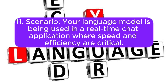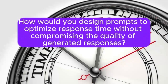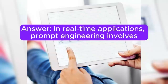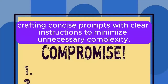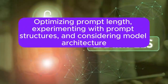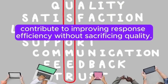Scenario 11: Your language model is being used in a real-time chat application, where speed and efficiency are critical. How would you design prompts to optimize response time without compromising the quality of generated responses? Answer: In real-time applications, prompt engineering involves crafting concise prompts with clear instructions to minimize unnecessary complexity. Optimizing prompt length, experimenting with prompt structures, and considering model architecture contribute to improving response efficiency without sacrificing quality.